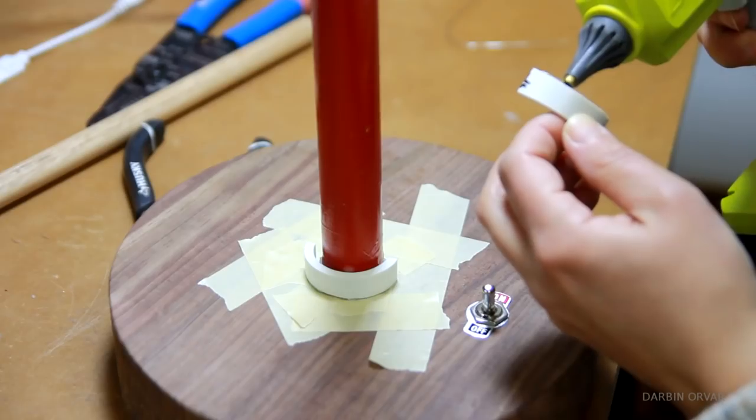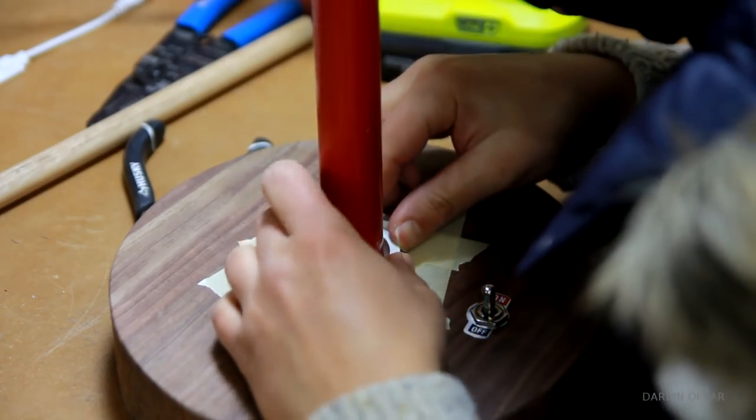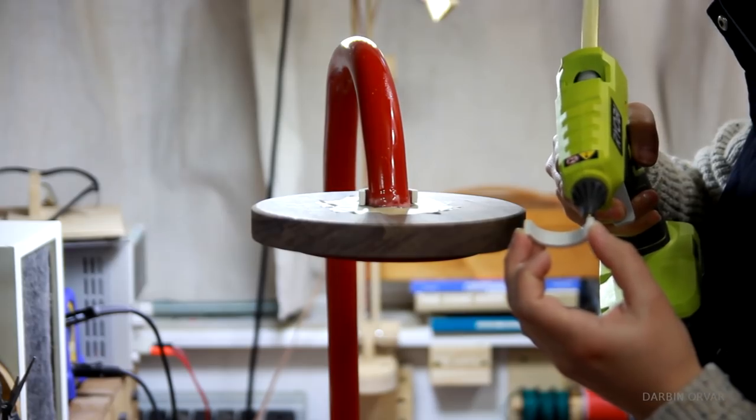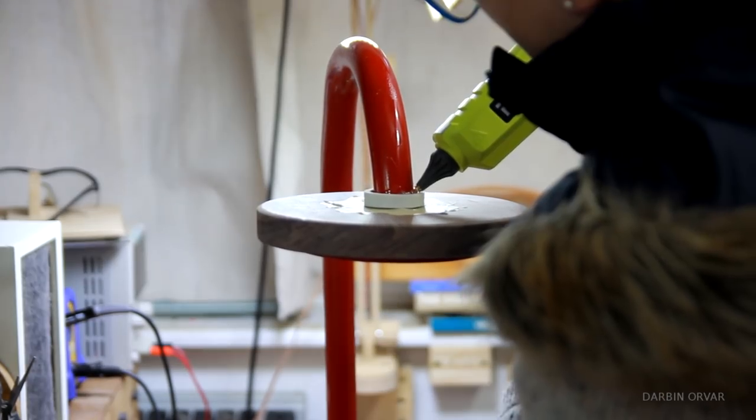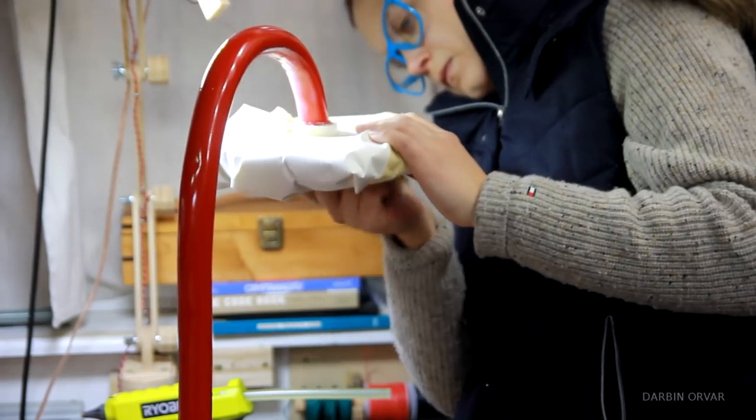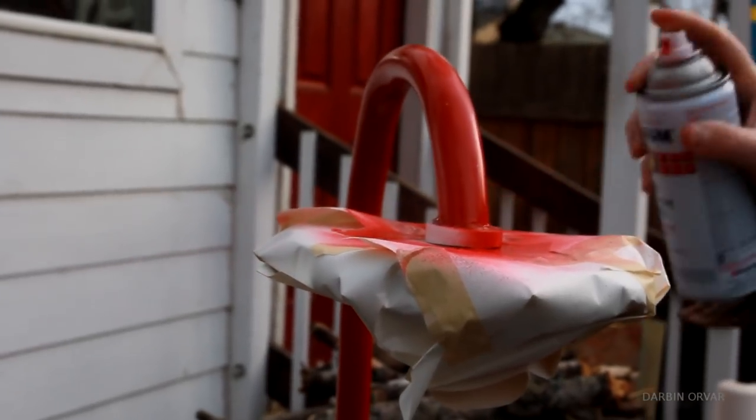Then taping the base first and using hot glue to secure the PVC to the wood, and also added some hot glue to fill in the gap. Then spraying that with the same red paint.